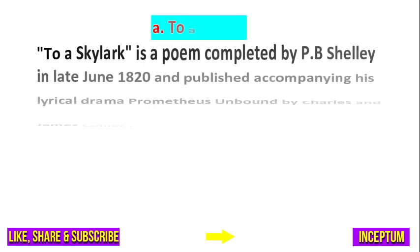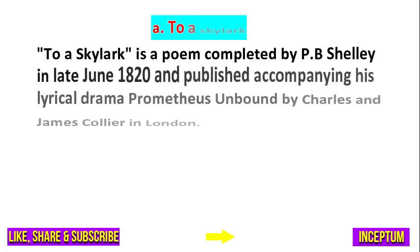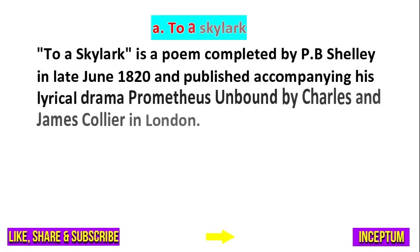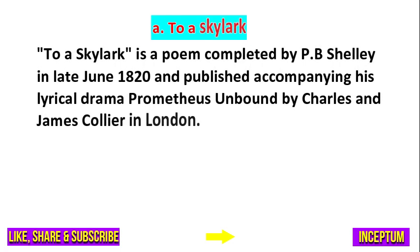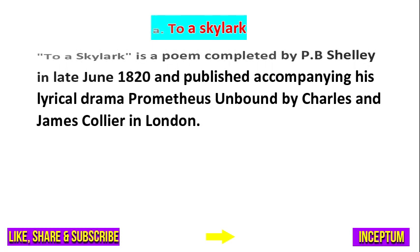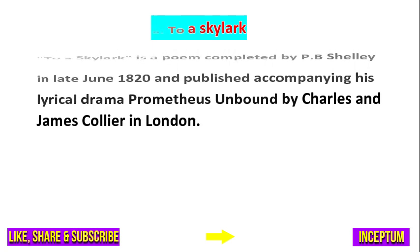And among the given options the right one is option A — To a Skylark. To a Skylark is a poem completed by P.B. Shelley in late June 1820 and published accompanying his lyrical drama Prometheus Unbound by Charles and James Collier in London.